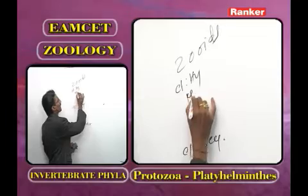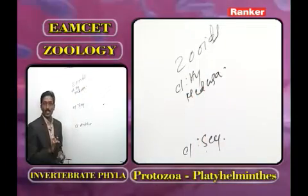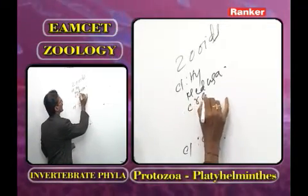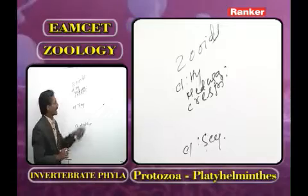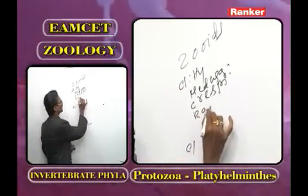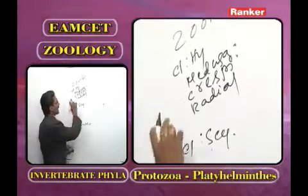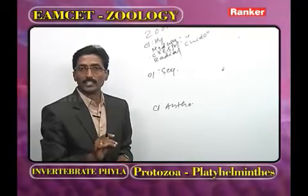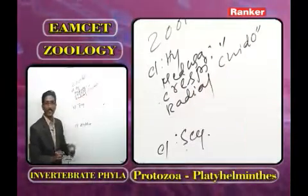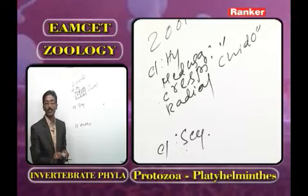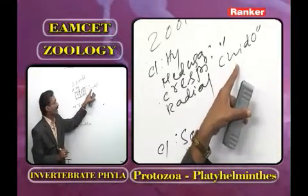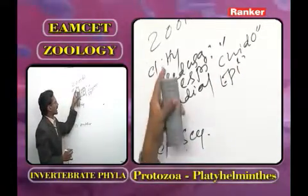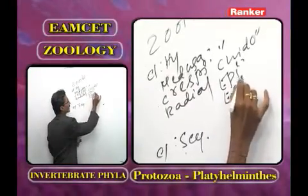In class Hydrozoa, when velum is present in the medusa, it is called craspedote medusa. Radial symmetry is present. Nematocysts (stinging cells) are present only in the epidermis. They help in attachment, locomotion, and food collection. Germ cells are also derived from epidermis (ectoderm).